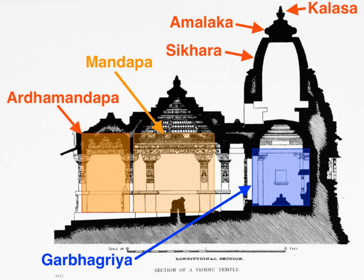On the exterior, the Garbha Griha is crowned by a tower-like Shikhara, also called the Vimana in the south. The shrine building often includes an ambulatory for parikrama, a mandapa congregation hall, and sometimes an antarala antechamber and porch between the Garbha Griha and Mandapa.